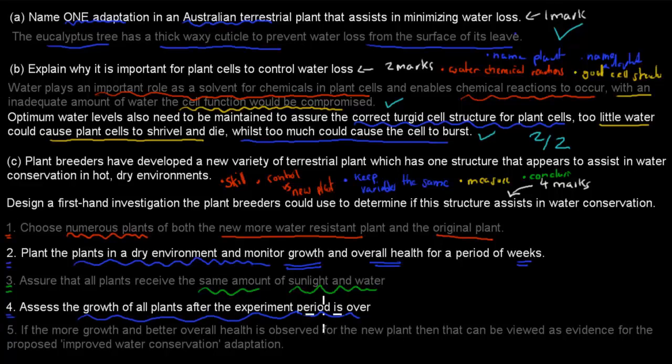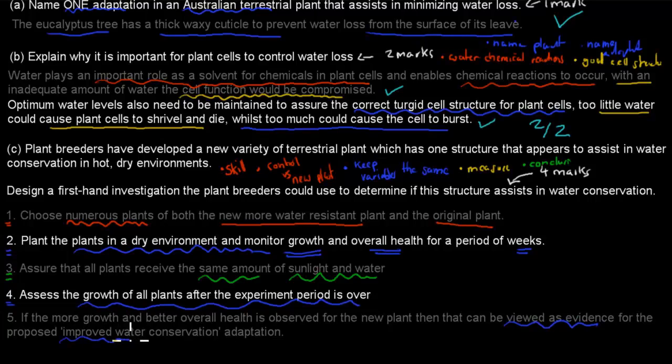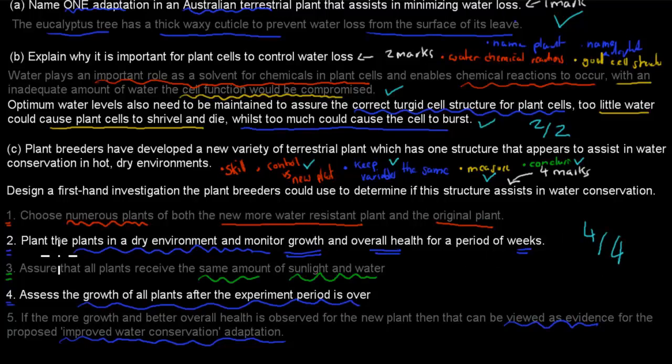And our conclusion is if after this period, so if more growth and better overall health is observed for the new plant, then that can be viewed as evidence for the proposed improved water conservation adaptations. The reason why I said not proof, but evidence, is because in science, that word proof is quite a big word. We should usually always use the word evidence. So these are the points. If you mentioned these most important points, that we have to have a control and the one we are testing is the new plant, if you make sure you mention that we keep our constant variables the same, such as sunlight exposure and water that the plants get, we have something that we measure, we mentioned that in experiments. In this case, we measured growth of the actual plant. And then the conclusion was that we said that if one grows more than the other, that would suggest or would be evidence for it having better adaptations. So each of these would give you a mark. So that would be four out of four.